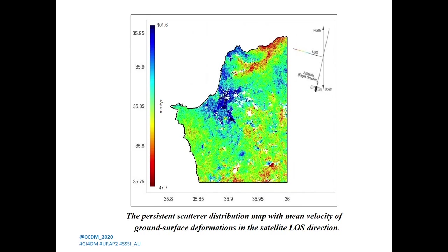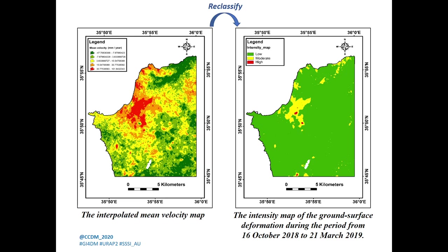Positive values indicate movement toward the satellite, while negative values indicate movement away from the satellite. The interpolated mean velocity map shows ranked positive and negative values as three zones — low, moderate, and high — in order to get the intensity map of the ground surface deformation during the study period.